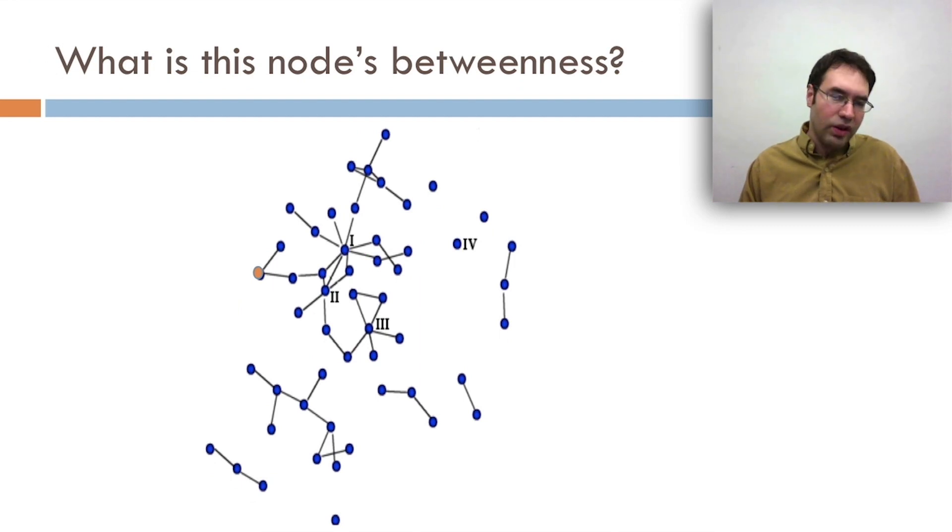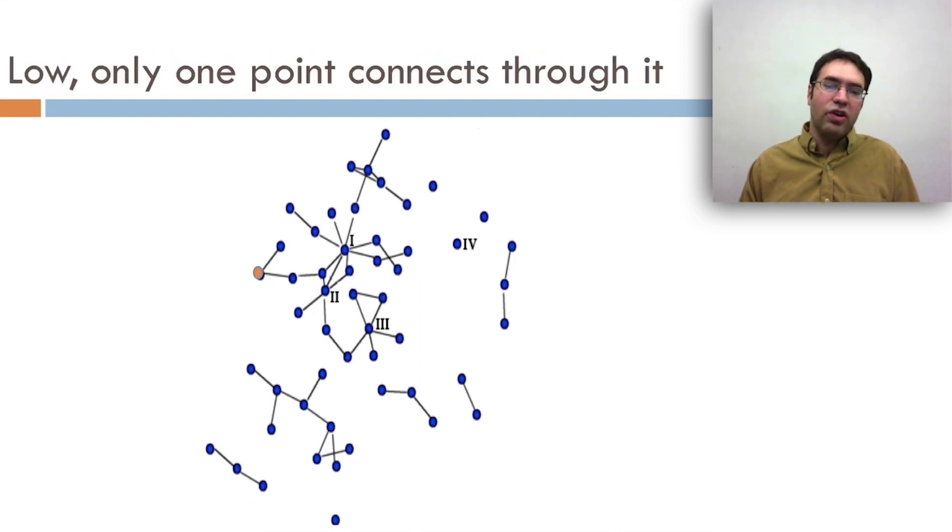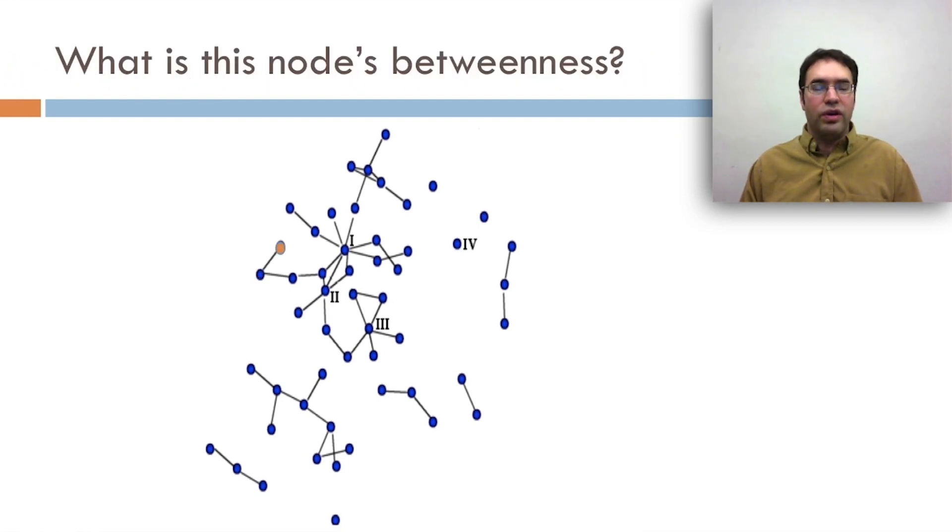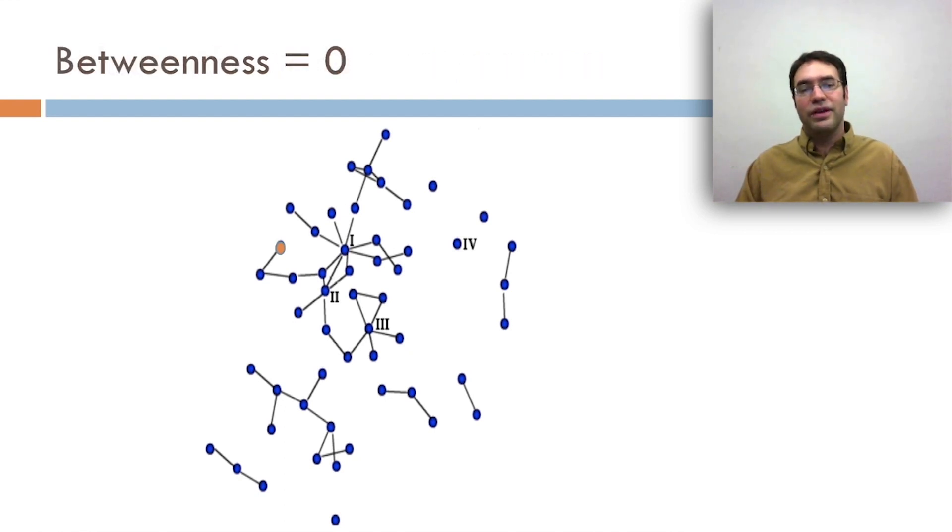How about this node's betweenness? It's going to be low because there's actually only one point that connects to anything else through it. What about this node? It's going to have no betweenness. Nothing goes through it. This is the least popular kid in the whole graph. Betweenness is zero.